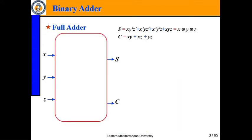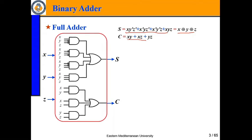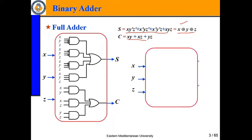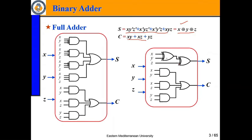We have to find the minterms. We have seen AOI implementation — first we use AOI implementation for carry, and if we have a shorter version of this expression we can use AOI implementation. This is the real analysis behind this chapter in logic circuits.